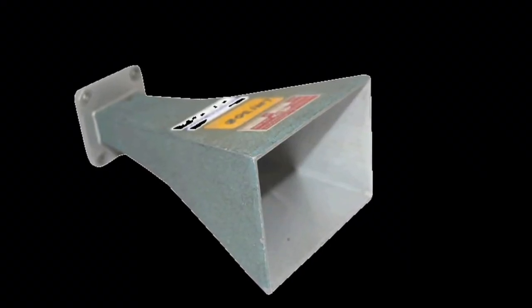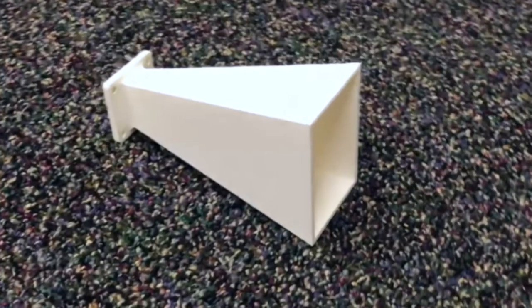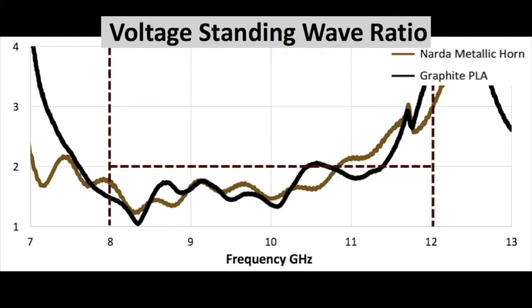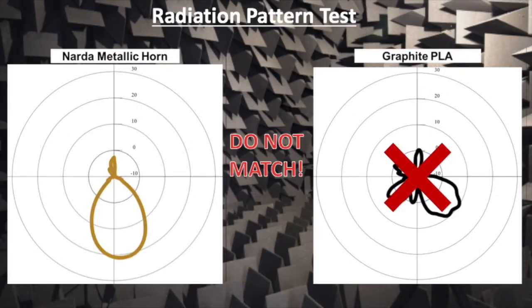After testing, we compared the results to both the metallic and non-conductive PLA antenna. The graphite PLA antenna matched the impedance of the waveguide, but to our surprise, was unable to effectively radiate the signal.